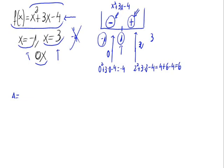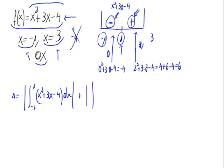The area equals the absolute value of the integral from -1 to 1 of (x² + 3x - 4) dx, plus the absolute value of the integral from 1 to 3 of (x² + 3x - 4) dx.